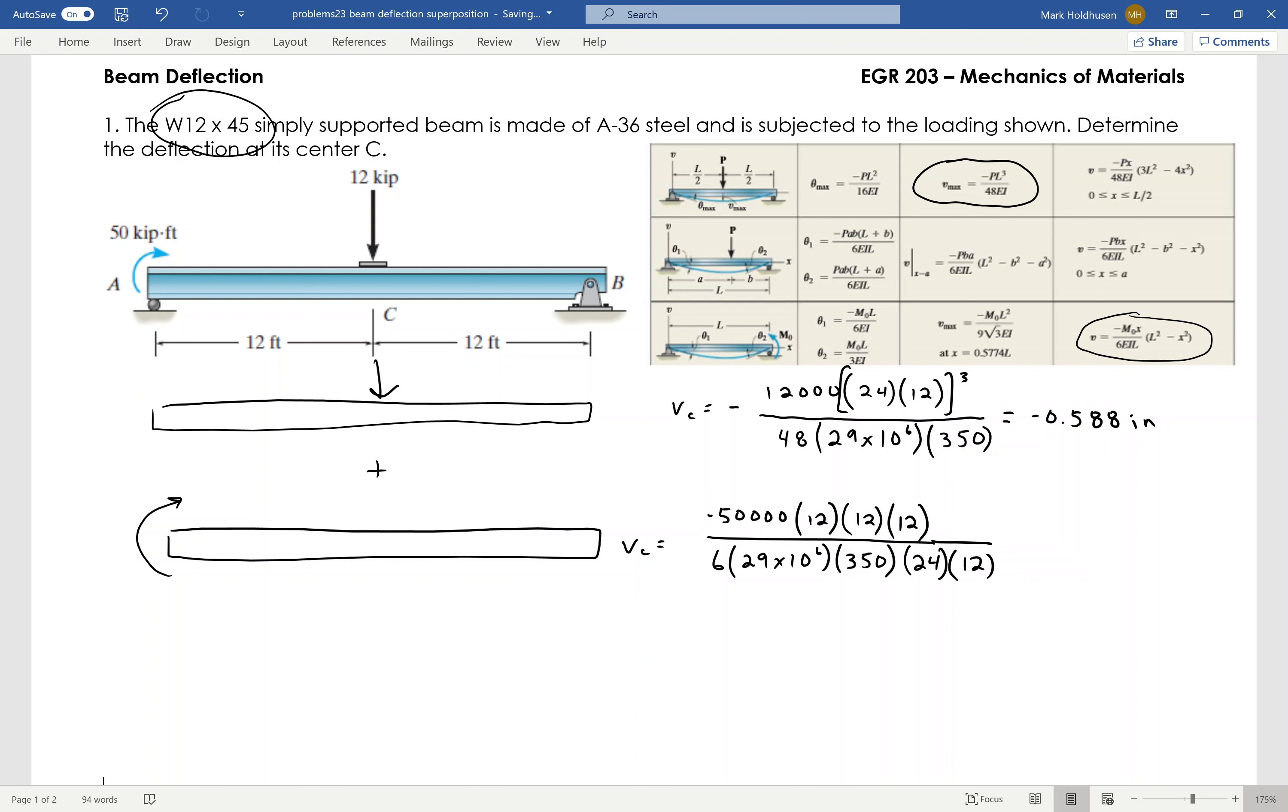And then that's going to be times L squared minus X squared, which is going to be 288 inches squared minus 144. Again that's 24 times 12 and 12 times 12 to get everything in inches. So calculating that, the deflection due to that moment at the midpoint is negative 0.306 inches.